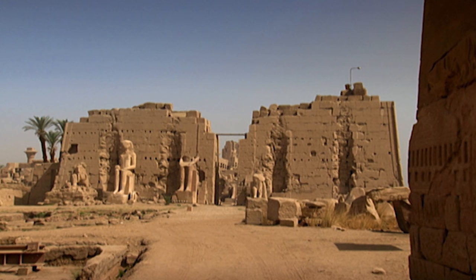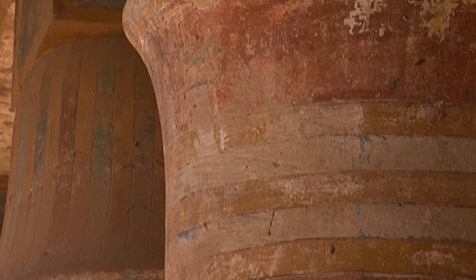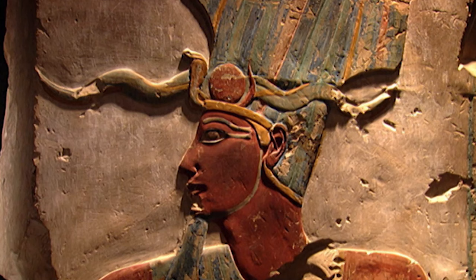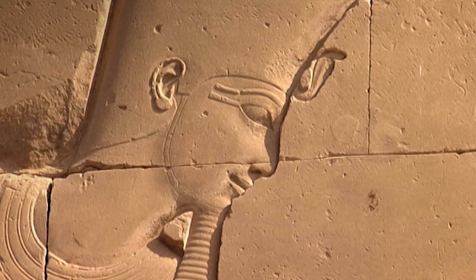Even today, the ruins attest to the glory of the former capital. The gigantic buildings made of huge stones are covered in colorful paintwork. Stone reliefs describe the heroic deeds of the pharaohs, among them Thutmose III. His biography starts at a time when Egypt's enemies were gaining strength.